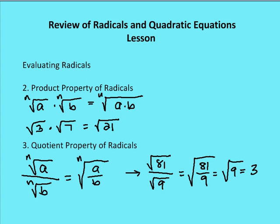Now let's cover the properties of radicals. The product property of radicals states that the nth root of a times the nth root of b equals the nth root of a times b, and vice versa. Note: if no index is shown on the radical sign, the index n is assumed to be 2, meaning it's a square root. For example, the square root of 3 times the square root of 7 equals the square root of 21.